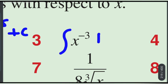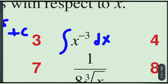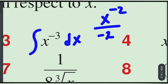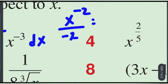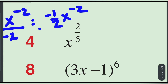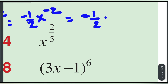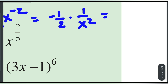Next, integrate x^(−3) by dx. Using the power line formula: x^(−3+1) over (−3+1) = x^(−2) over (−2), which gives −1/2 times x^(−2), or equivalently −1 over 2x² plus C.